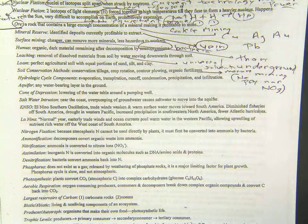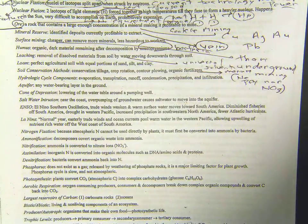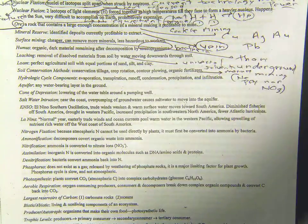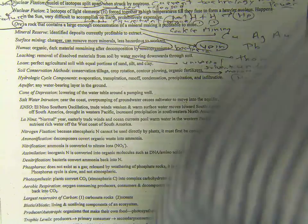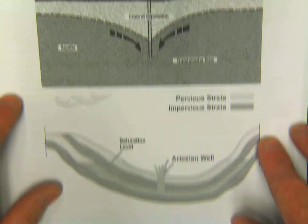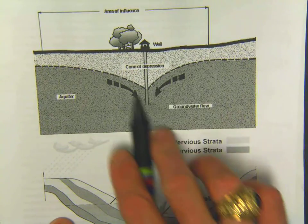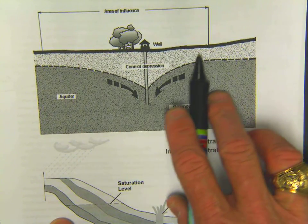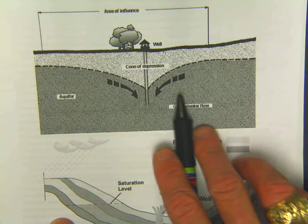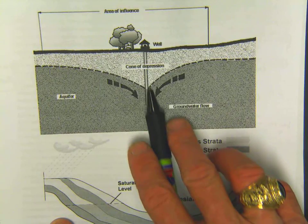I have a picture of a cone of depression. This is the cone of depression right here — this is what affects your water table. Here's your aquifer.